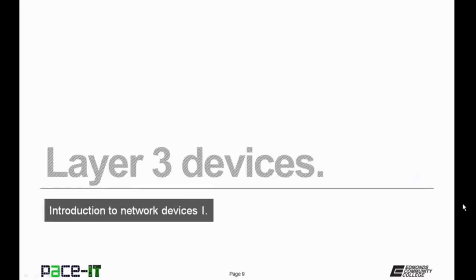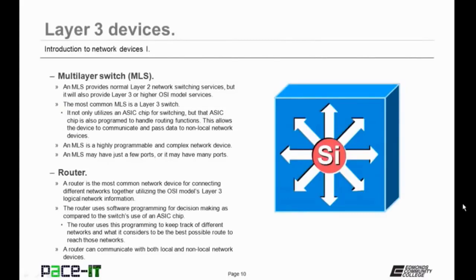Now let's move on to layer 3 devices. First up is the multi-layer switch. A multi-layer switch provides normal layer 2 network switching services, but it will also provide layer 3 or higher OSI model services. The most common multi-layer switch is a layer 3 switch. It not only utilizes an ASIC chip for switching, but that ASIC chip is also programmed to handle routing functions, allowing the device to communicate and pass data to non-local network devices. A multi-layer switch is a highly programmable and complex network device, and not very common in the small office home office network because they're very expensive — you're more likely to find them in an enterprise local area network.